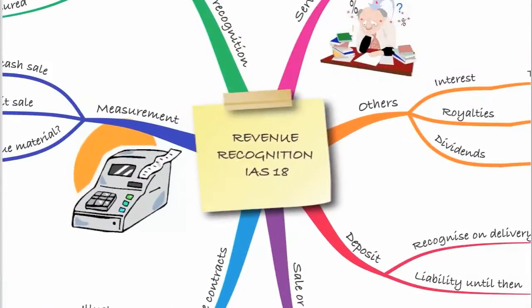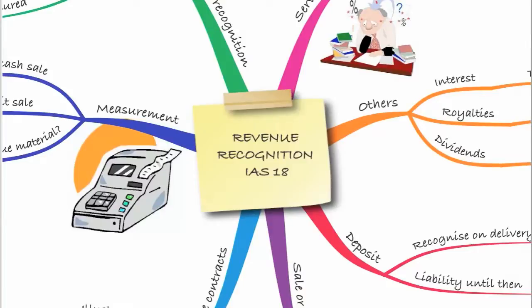That was our session on revenue recognition under IAS 18. It's relatively small but very important and often examined. You need to know when to recognise revenue on goods versus services, look out for deposits and goods sold on sale or return, and handle mixed contracts by separating goods and services and recognising each according to its nature.